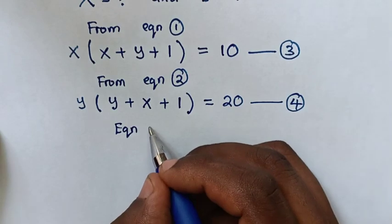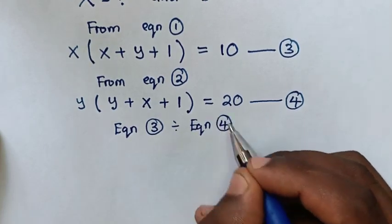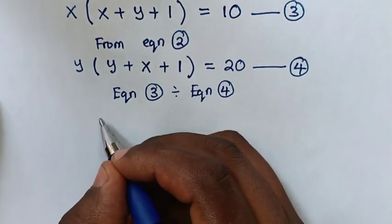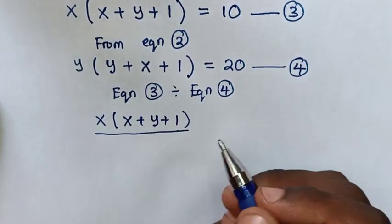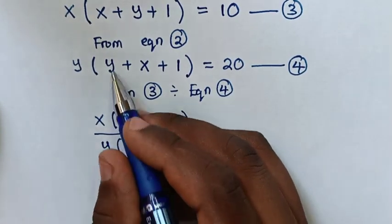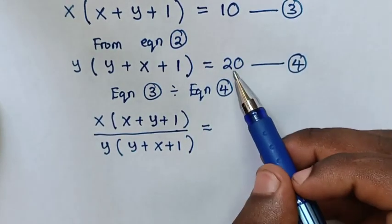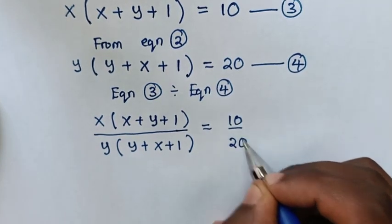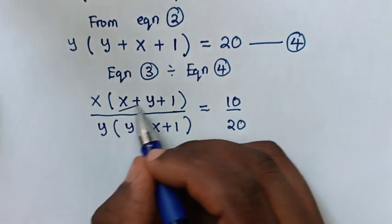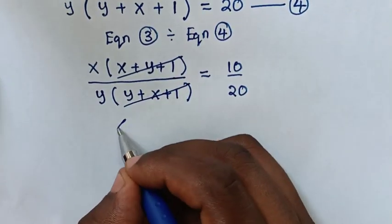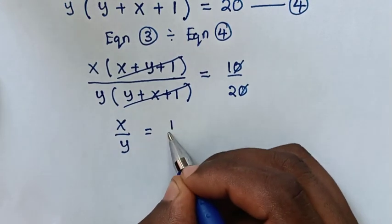In the next step, we take equation 3 divided by equation 4. So from equation 3 on the left side, x bracket x plus y plus 1 bracket, over equation 4 on the left side, y bracket y plus x plus 1 bracket, is equal to 10 divided by 20. To simplify, x plus y plus 1 and x plus y plus 1 will cancel, so x over y is equal to 1 over 2.